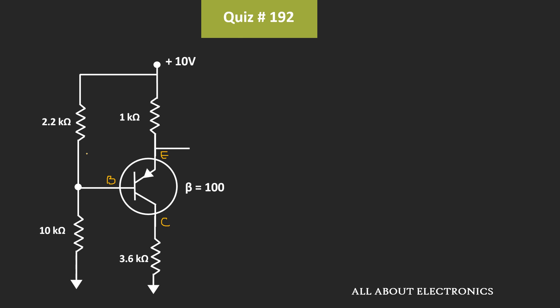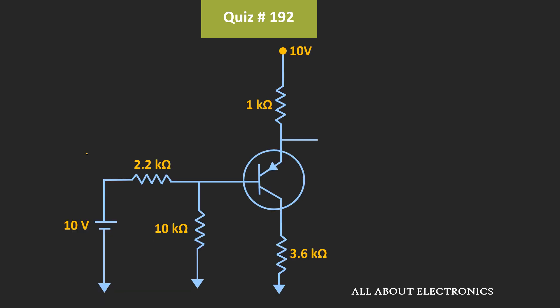First, let's find the Thevenin's equivalent of the given portion. To find the Thevenin's equivalent circuit, we redraw the same circuit. For the given circuit, the Thevenin's equivalent resistance Rth is equal to 2.2 kΩ in parallel with 10 kΩ, which equals 2.2 × 10 kΩ divided by 2.2 plus 10 kΩ. That is equal to 1.8 kΩ.